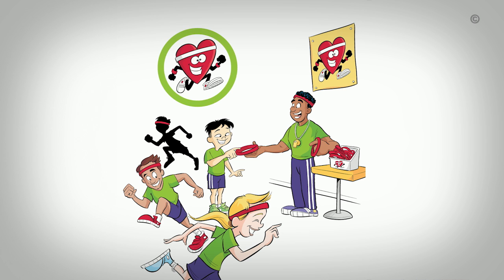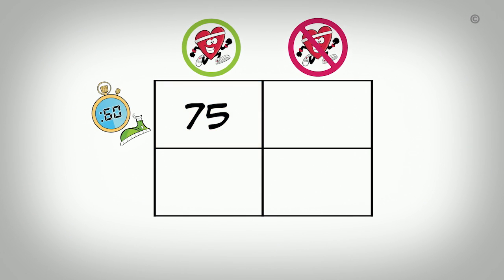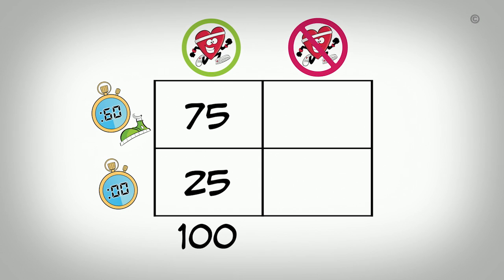Suppose we want to know if community-based interventions are an effective way to increase the likelihood that adolescents participate in one hour of daily physical activity. In this example, an RR above 1 will represent a positive outcome because we hope to see an increase in physical activity among those exposed to the intervention compared to those not exposed. We have 100 adolescents exposed to a community-based intervention to promote physical activity and another 100 not exposed. Among those exposed, 75 participate in physical activity for one hour each day and 25 do not. Among those not exposed, 45 participate in physical activity and 55 do not.